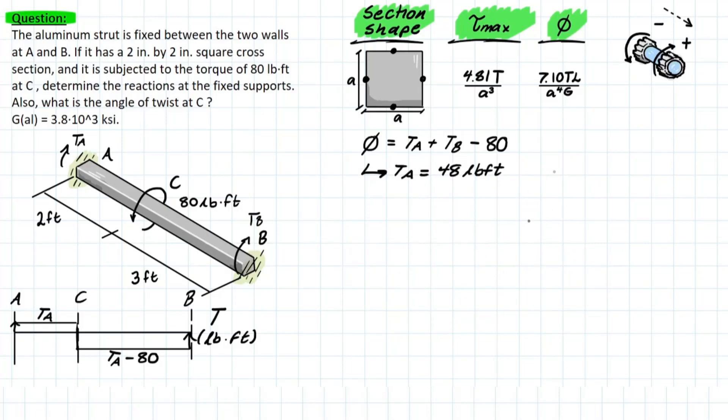Just had to clean up the problem. With that 48 pounds-feet, we recall our equilibrium equation and we can plug it in where we have 48 plus TB minus 80. And solving for that, you're going to have TB is equal to 32 pounds-feet. And those are your answers for both of the reactions.